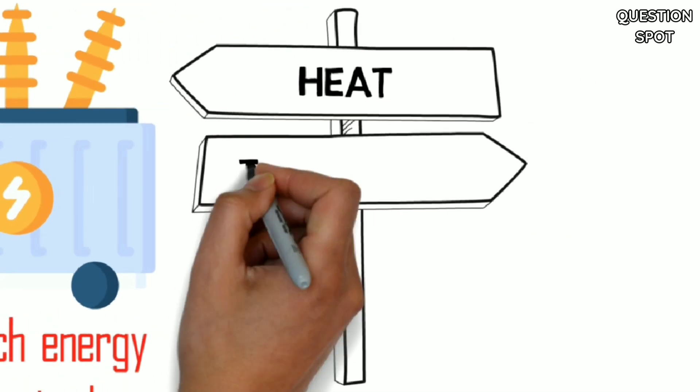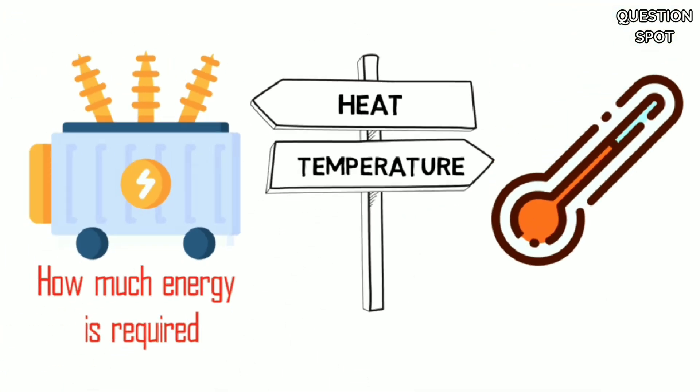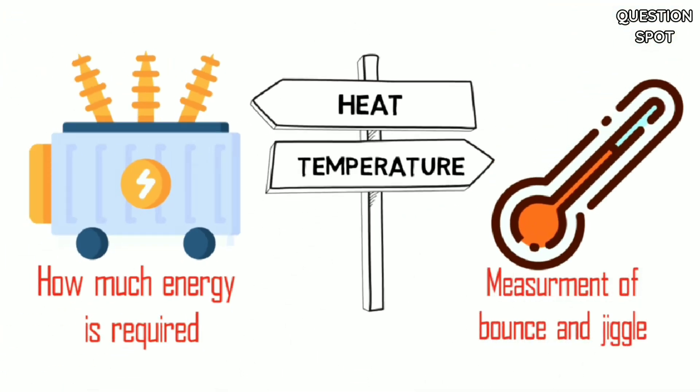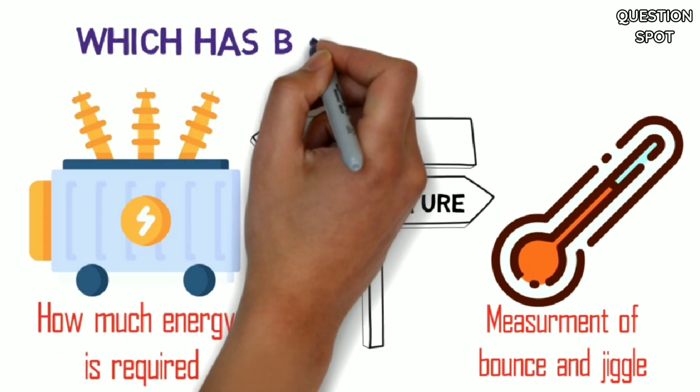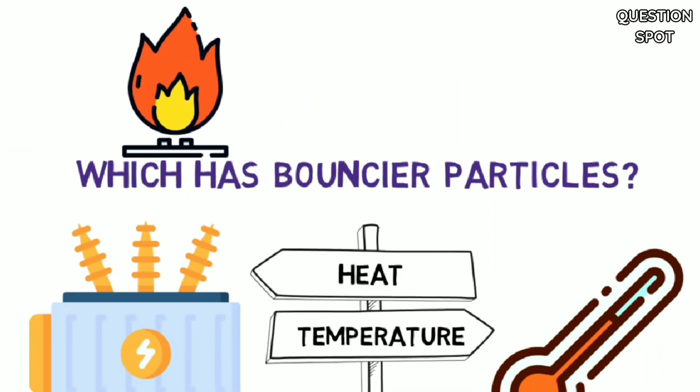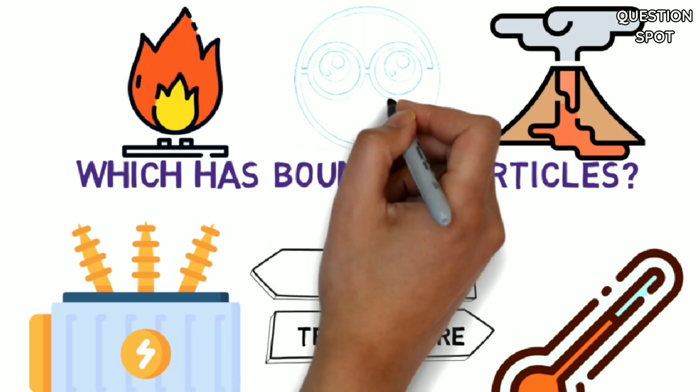On the other hand, temperature is a measurement of the amount of bounce and jiggle in bunches of atoms. So which has bouncier particles, fire or lava? The answer might surprise you.